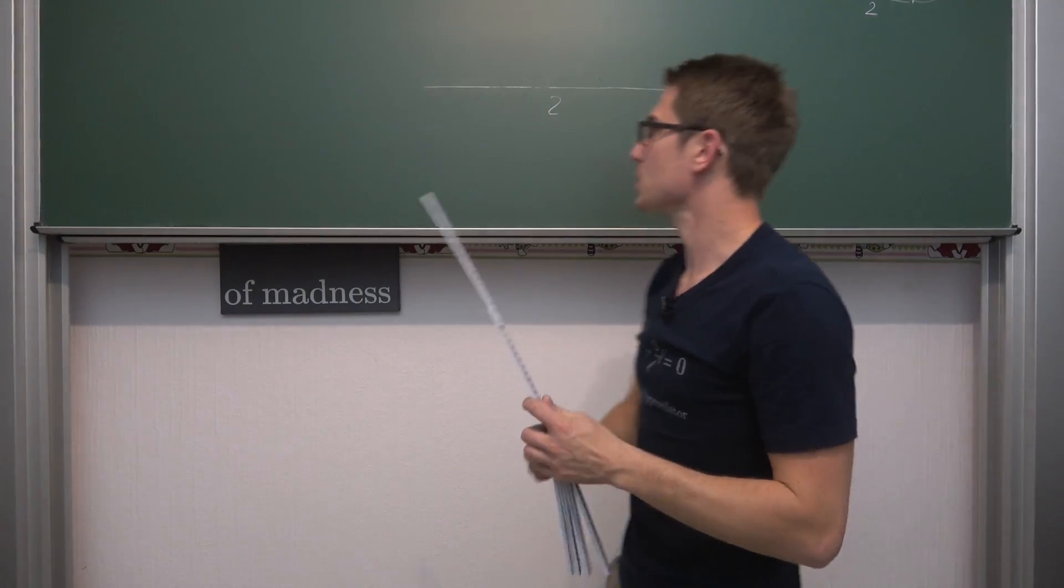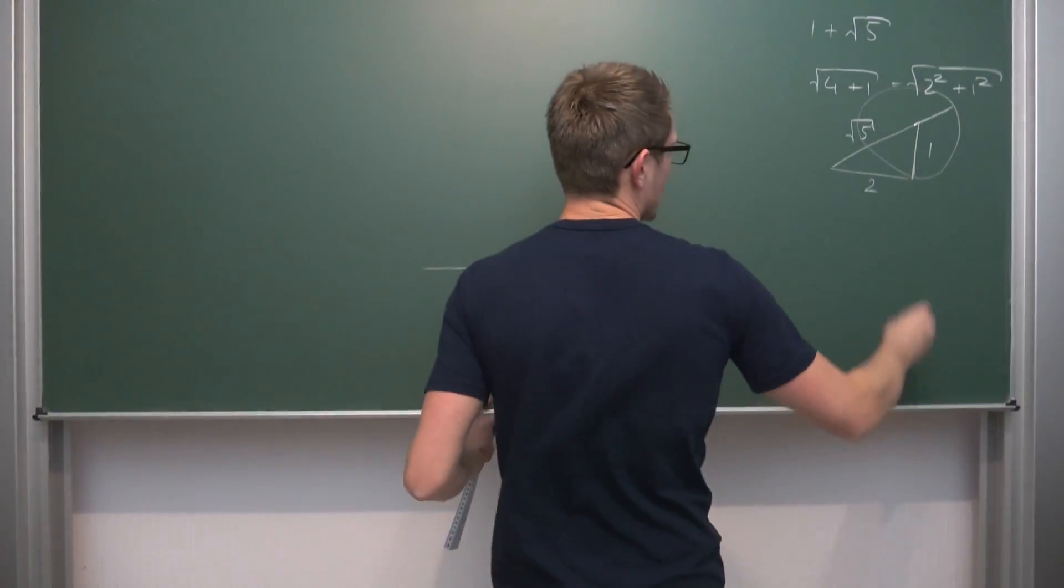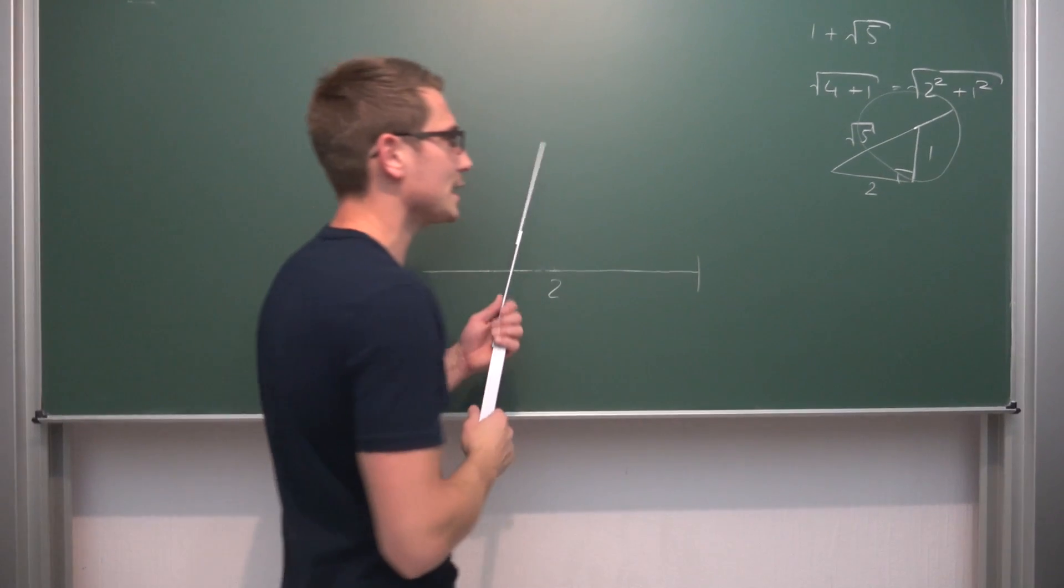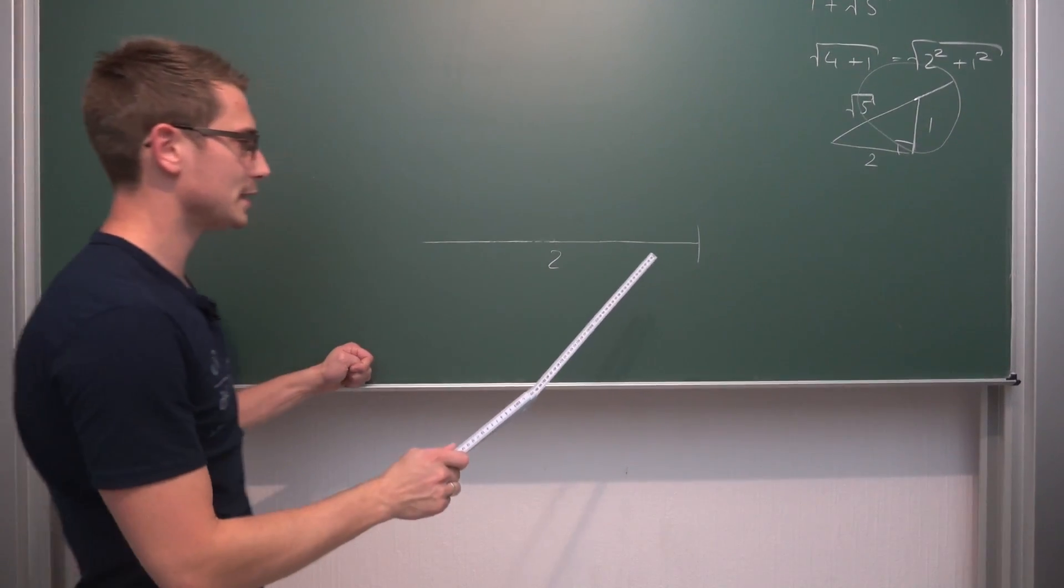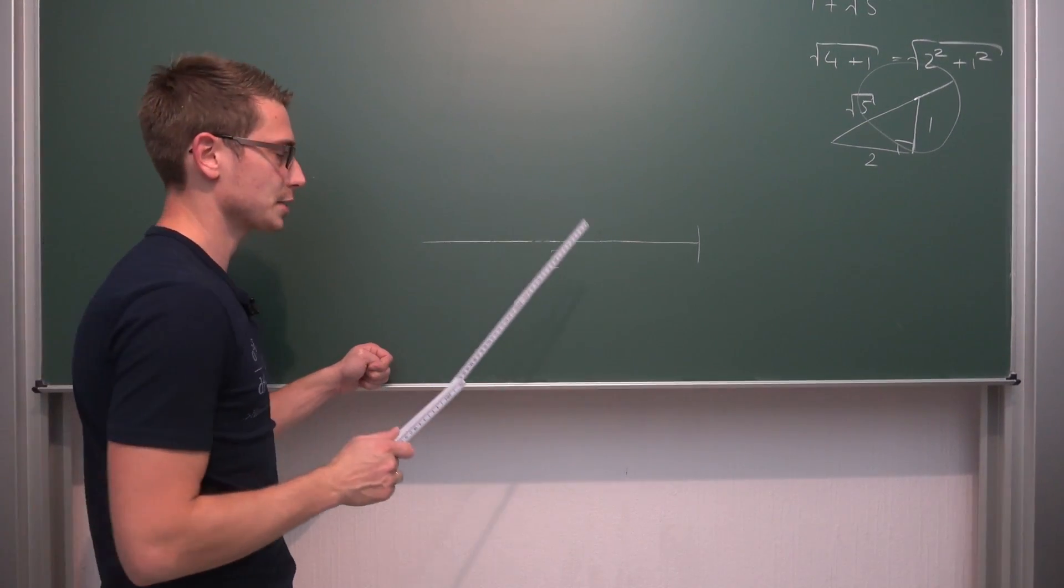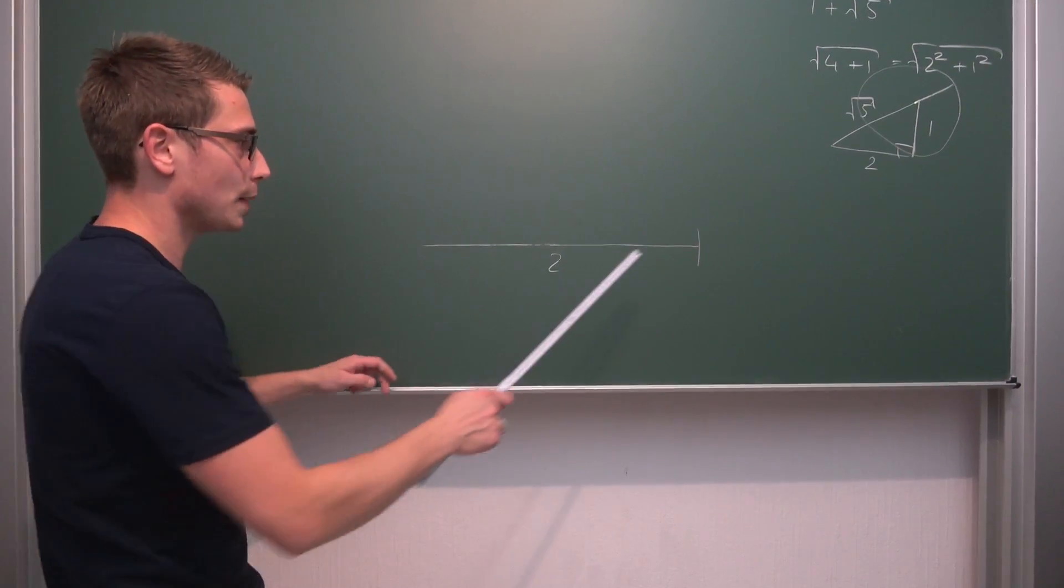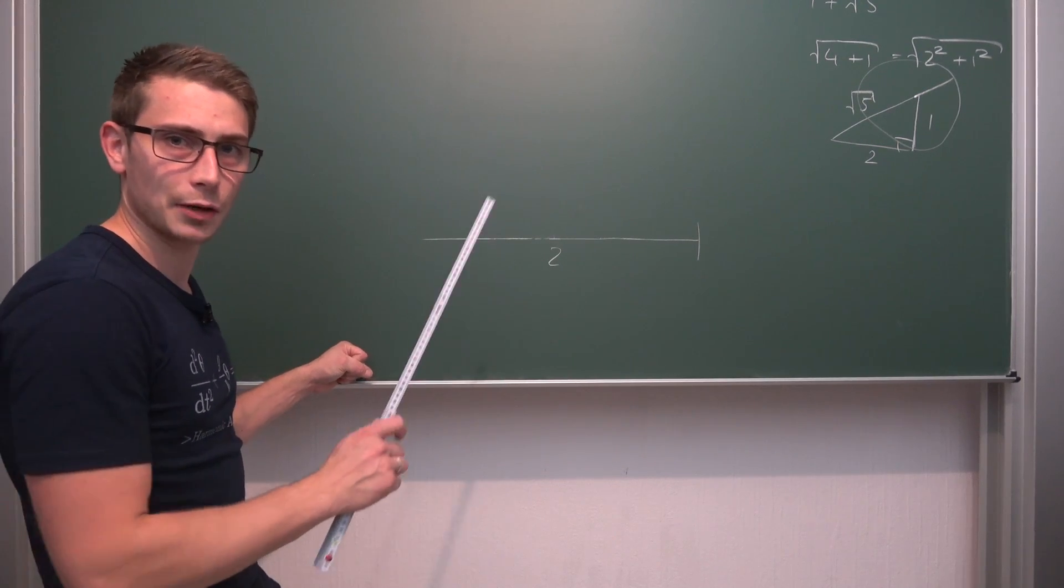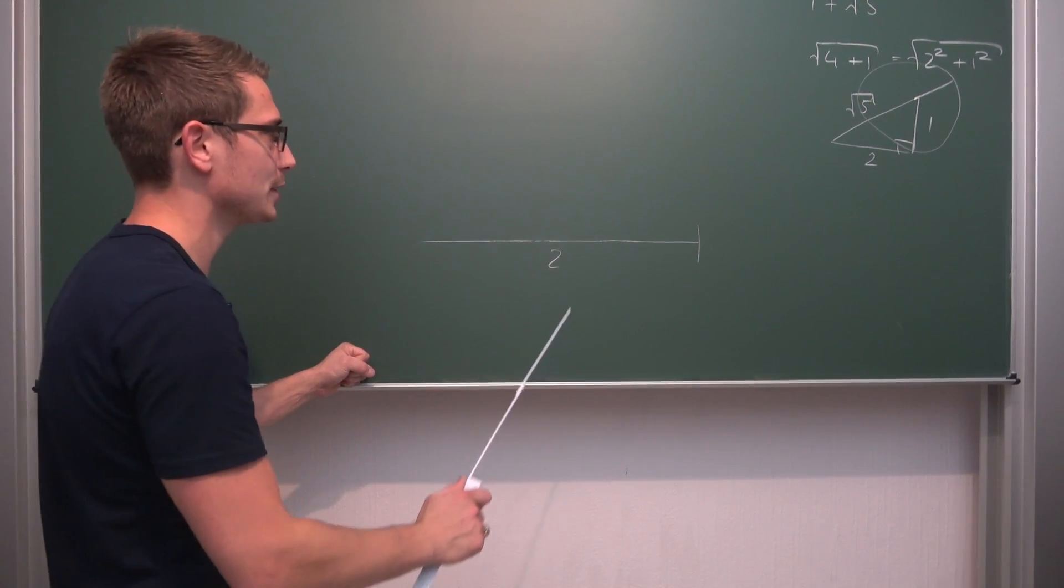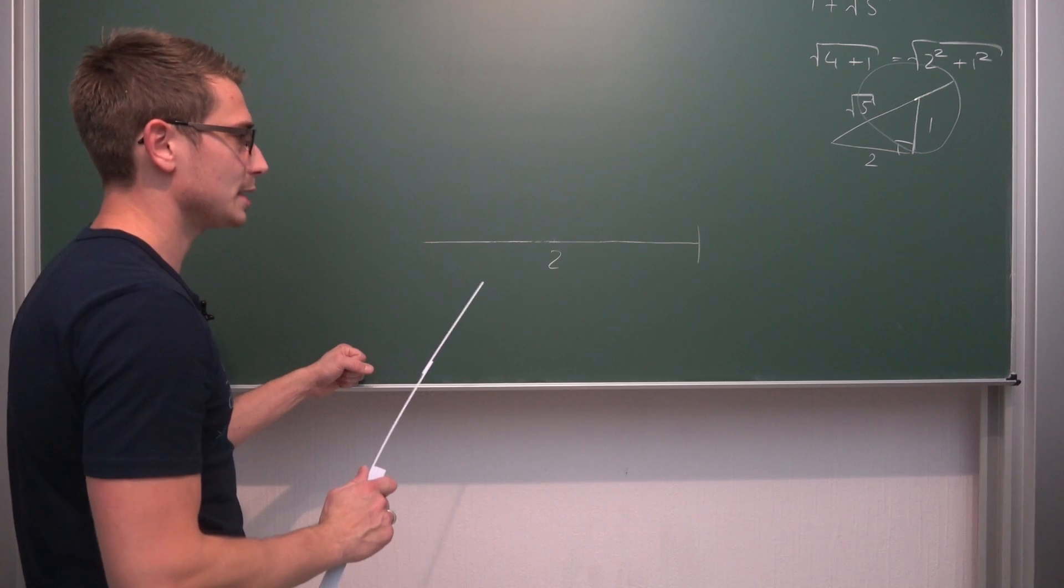But now what we need to do is we need to construct a right triangle just like here. Meaning we need to get a side length perpendicular to this one that we got. How would you get a side length perpendicular to the one that we got right here? Well, we are going to bisect our line in some kind of way. This way we are going to get a perpendicular and then we are just going to keep drawing.